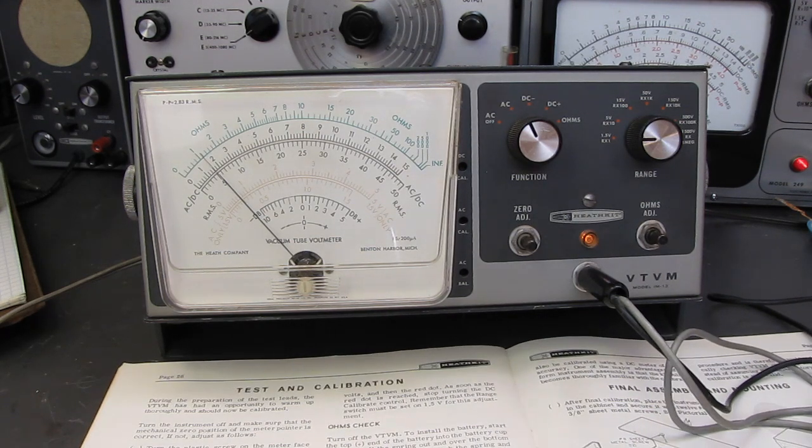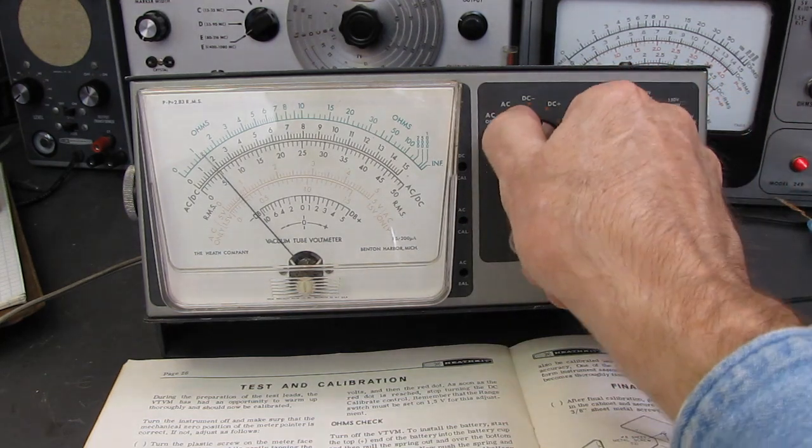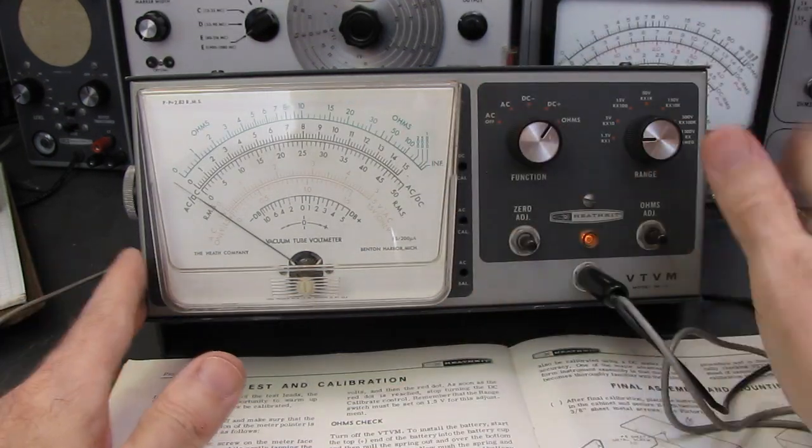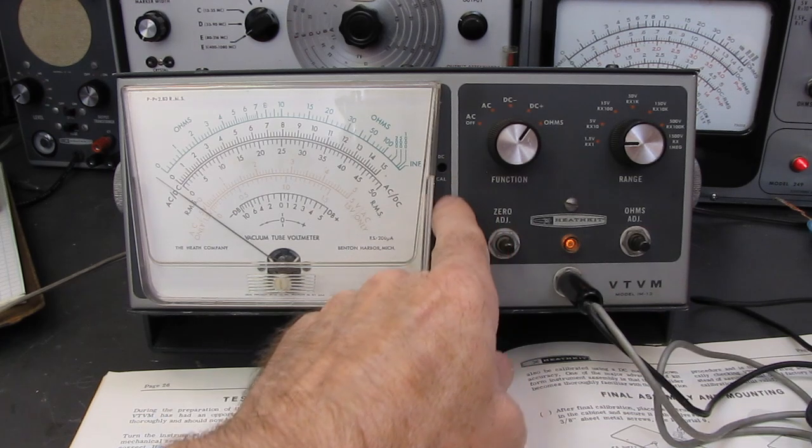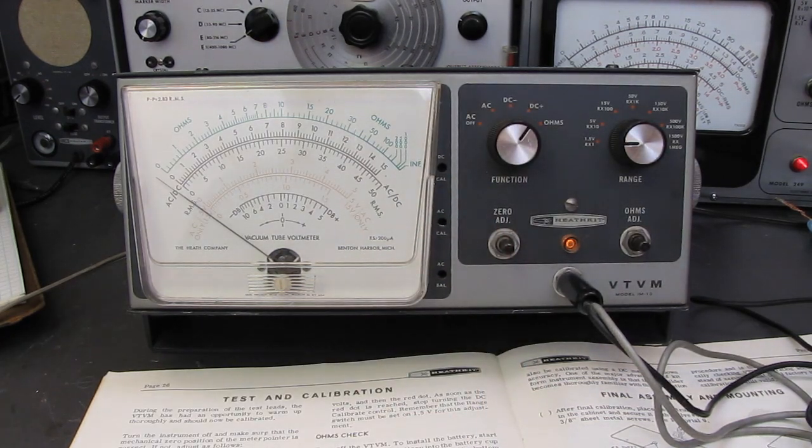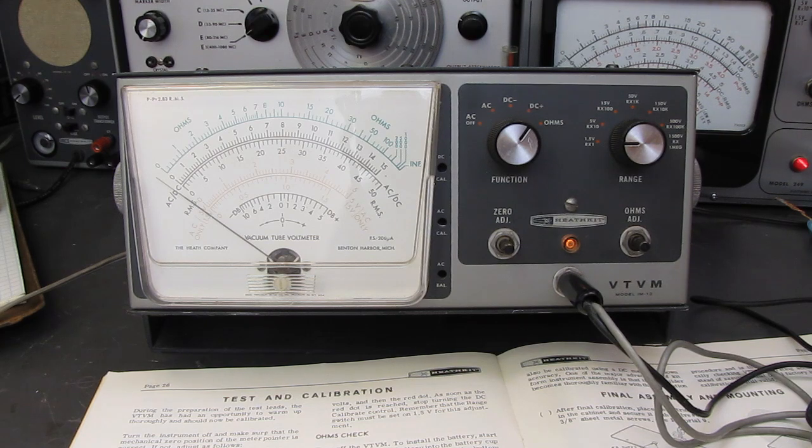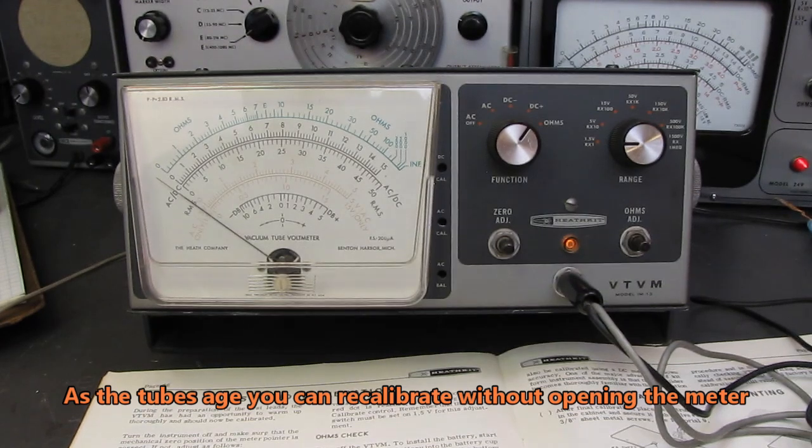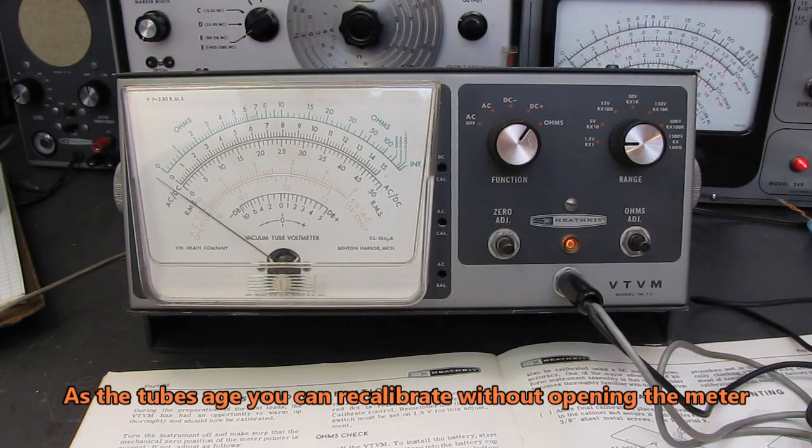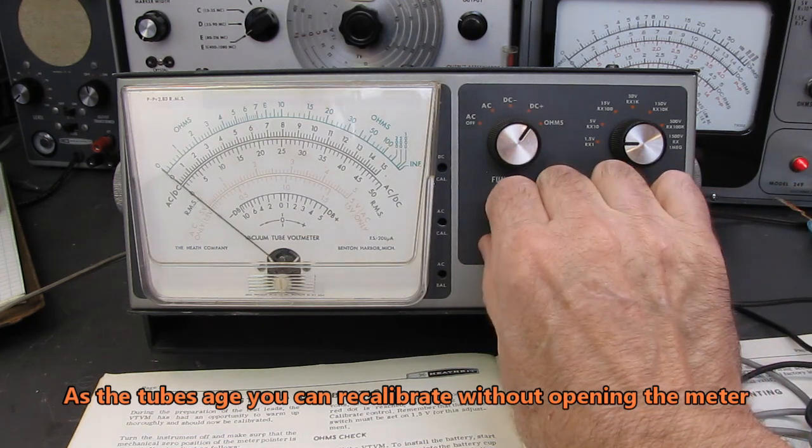All right. Zero adjust. Set the function switch to DC+. The nice thing about this meter is you can access the calibration points from outside. That could be good and bad. That means everybody with a diddle stick is going to play with it, whether they know what they're doing or not. But for the technician where it's on his bench, it's kind of a handy feature to have.